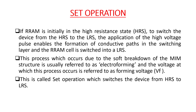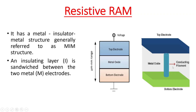First let us look at the set operation. If the RAM is initially in the high resistance state, there will be no conducting filament or no conducting path in the oxide. To switch from HRS to LRS we apply a high voltage that enables the formation of a conducting path in the oxide layer, switching the RAM to LRS. This process is called electroforming and this operation is called the set operation.